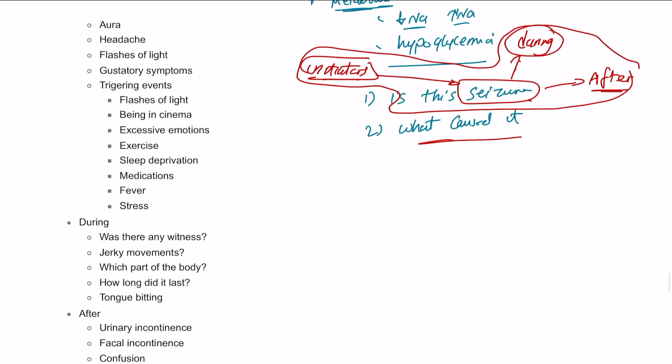So, starting by, is this seizure? We have a few questions before having this seizure. And these can include the aura. Ask your patient, what were you doing before having the seizure? How did you feel? Did you feel dizzy? Did you have any headache? Were you in a cinema? Were there flashing lights? Did you feel any gustatory symptoms, including metallic taste in your mouth or lip stiffness? And excessive emotion, maybe in a fight, or exercising, previous sleep deprivation, fever, stress, and so on. So, these are before the seizure.